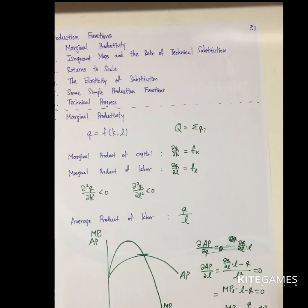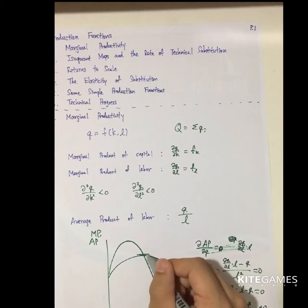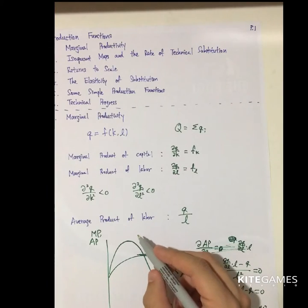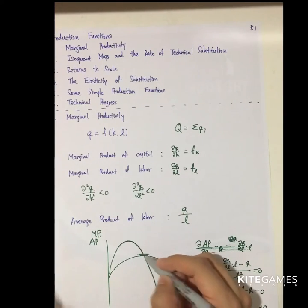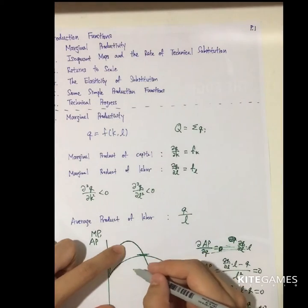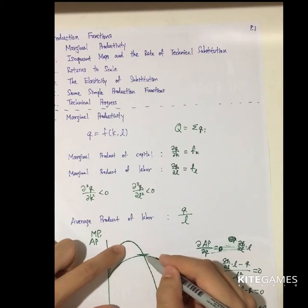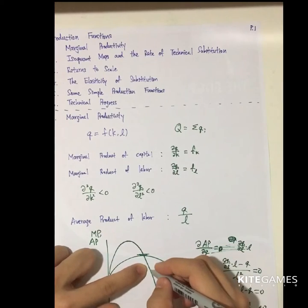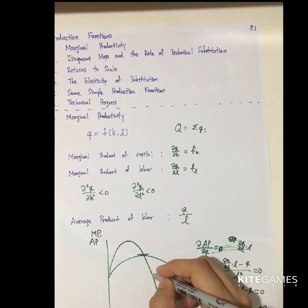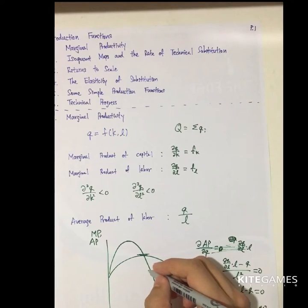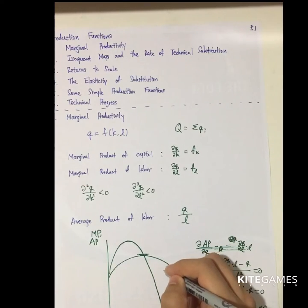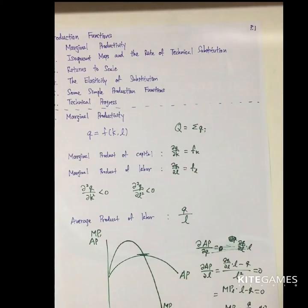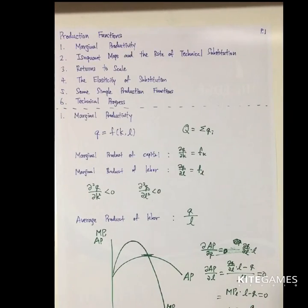The intuition is that if the increase in output from adding one more unit of labor — the MP — is above the average, this will pull up the average. And beyond that point, when the increase in labor leads to an increase in output smaller than the average, this will push down the average. So at the intersection, the marginal product and average product are equal. These are the intuitive explanations.